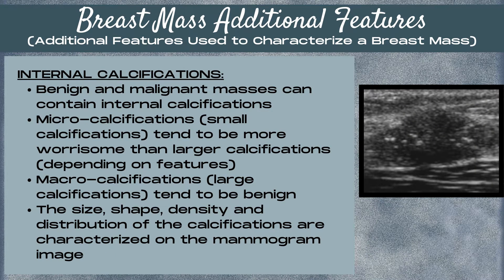The next feature that a breast mass can have is internal calcifications, and both benign and malignant masses can contain internal calcifications. Micro calcifications are small calcifications that tend to be more worrisome than larger calcifications, but it's very dependent on their features. Macro calcifications are large calcifications and they tend to be benign.